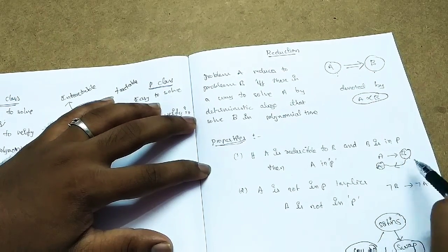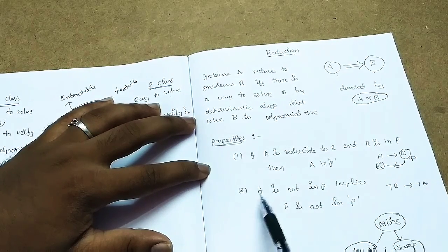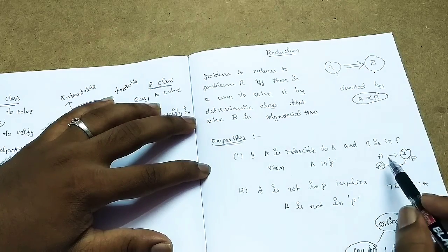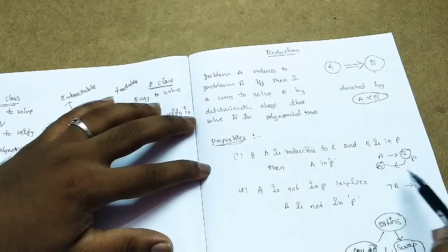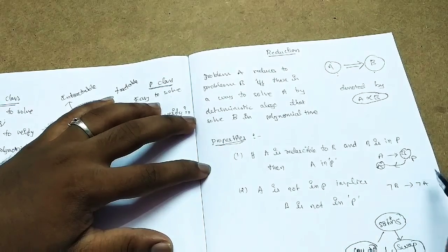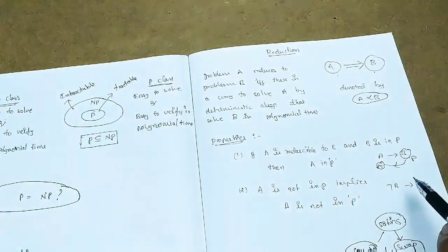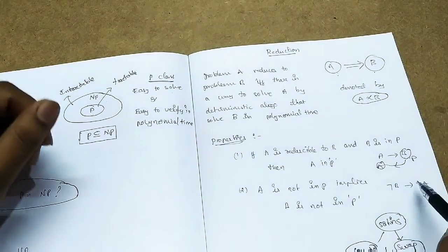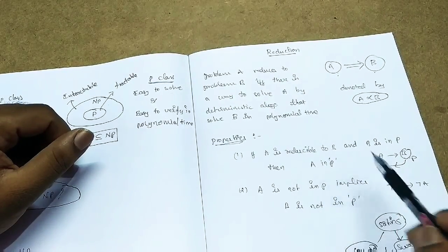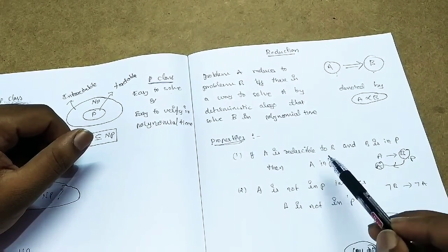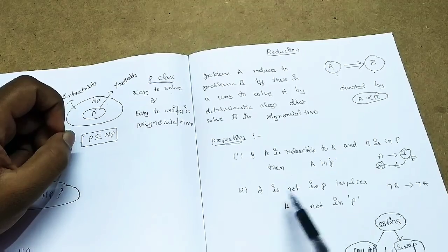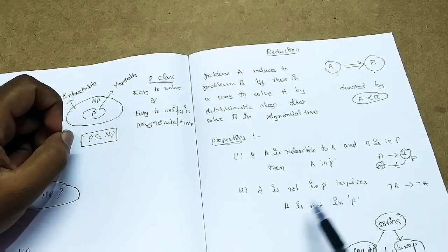If A is reduced to B and B is in P, then A is also in P. Conversely, if A is not in P and A is reduced to B, then B is also not in P.